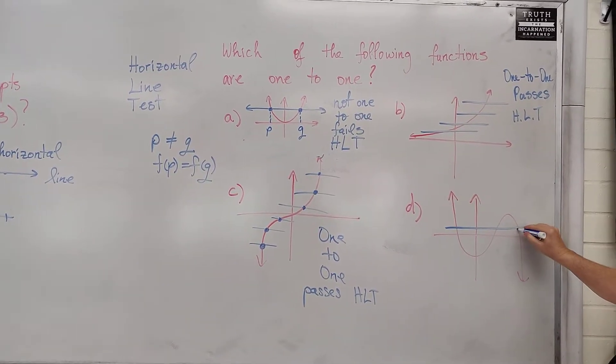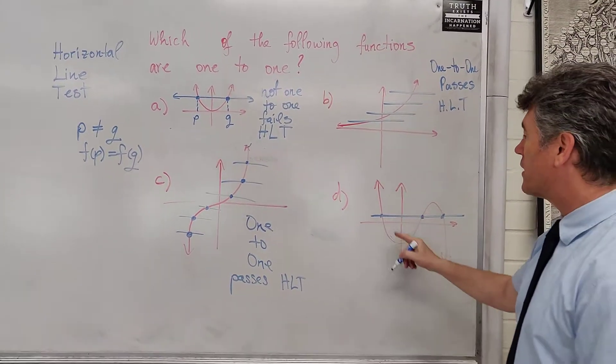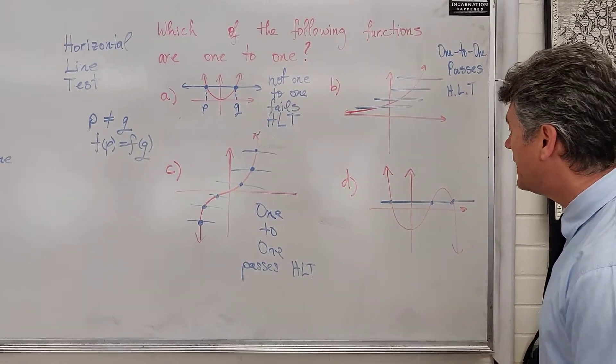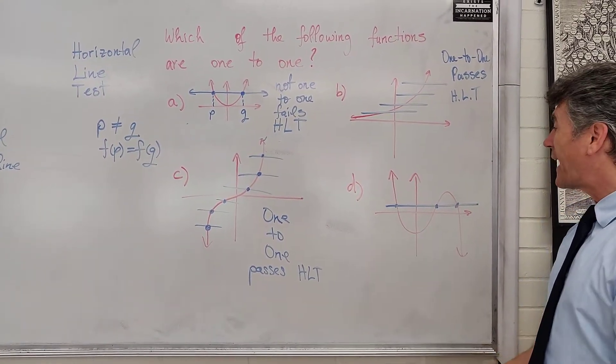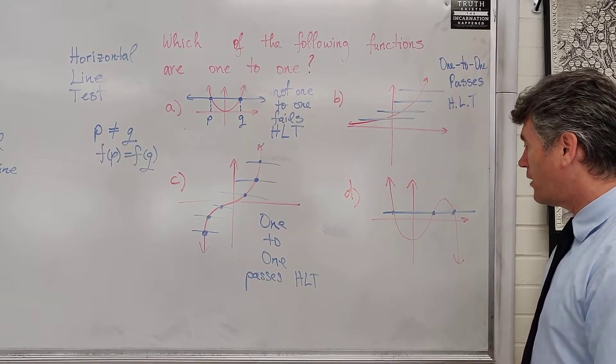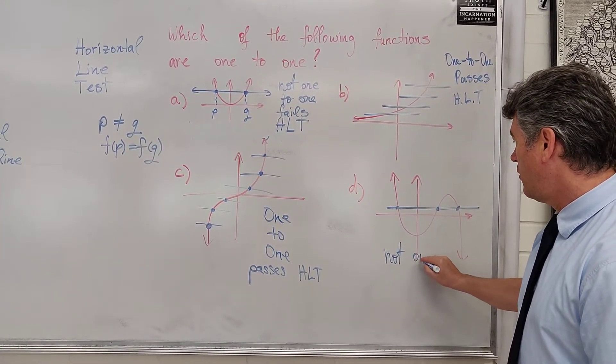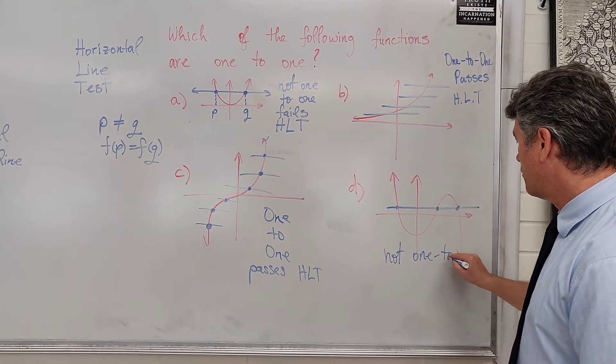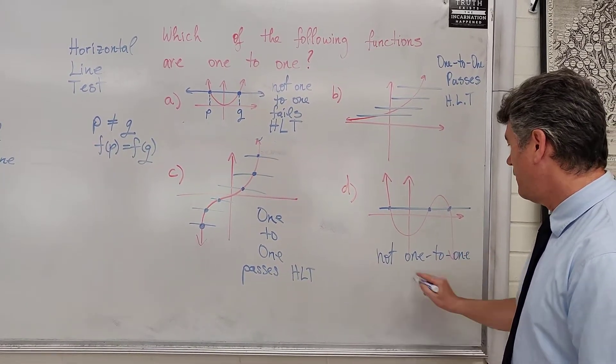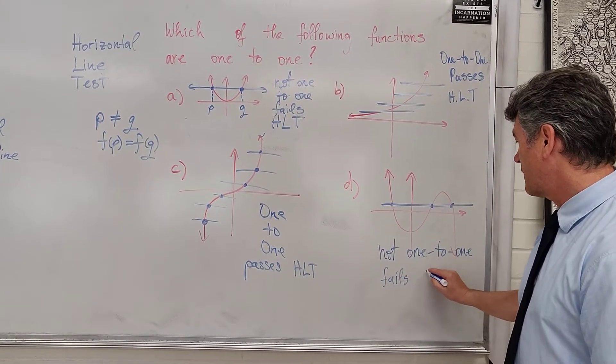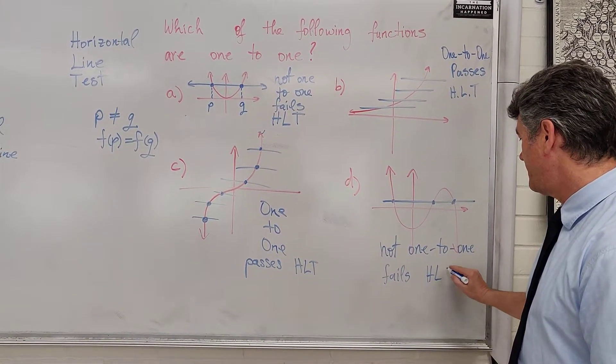Let's take a look at the last one. Oh, my goodness. Not only are there just two points, look at that, there's three points. Different points that have the same y-coordinates. So, not one-to-one. Fails H-L-T.